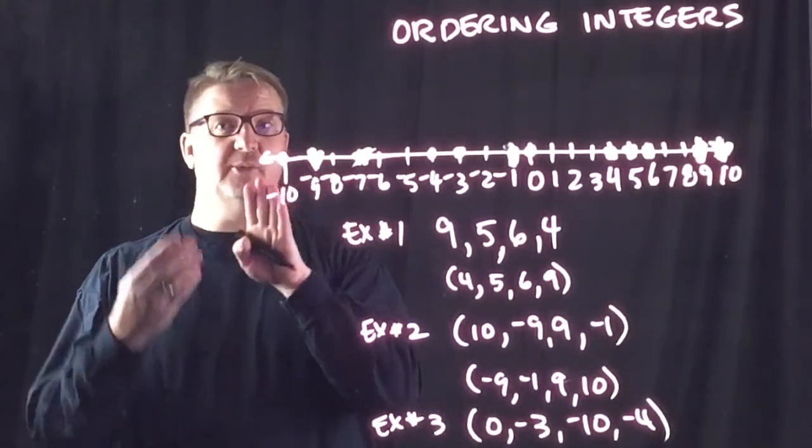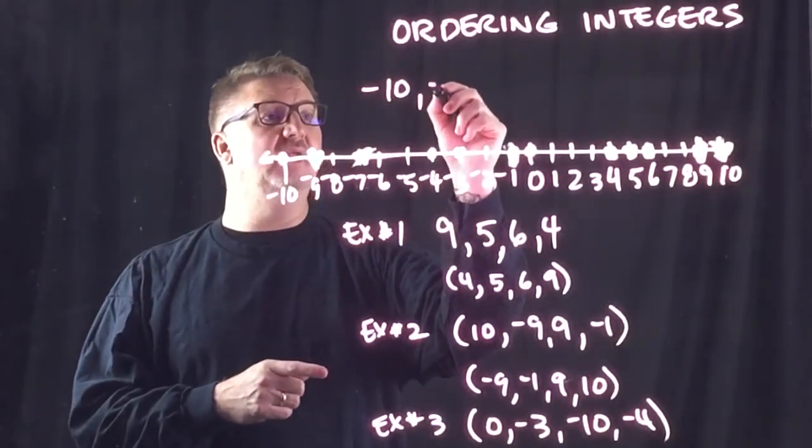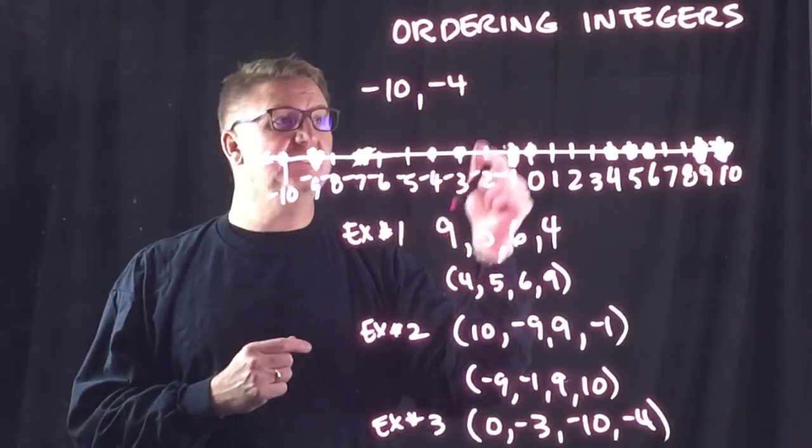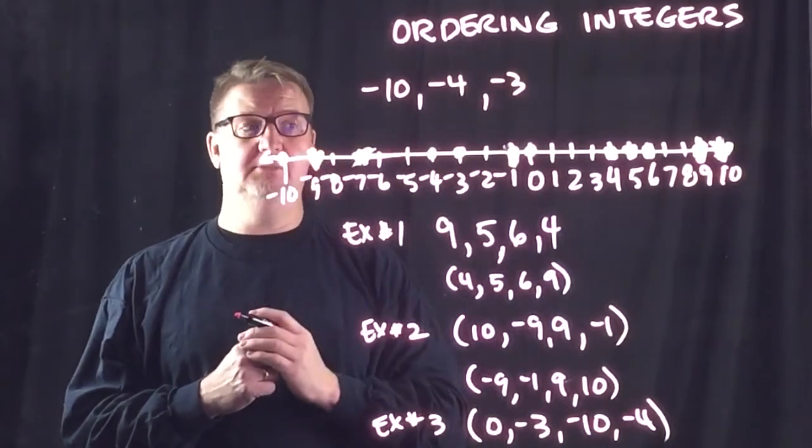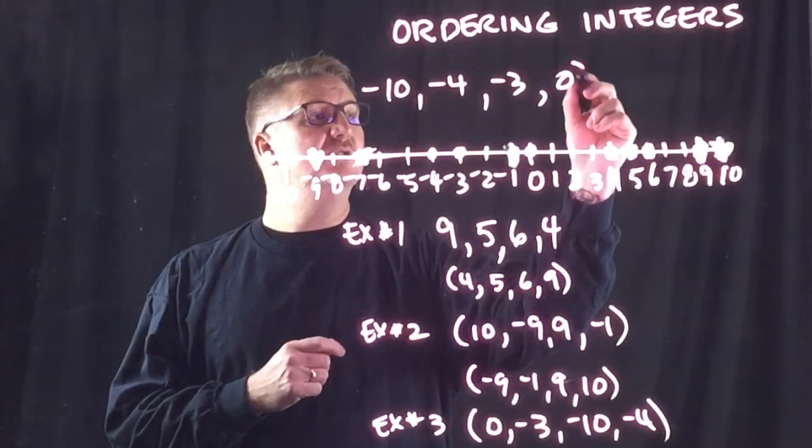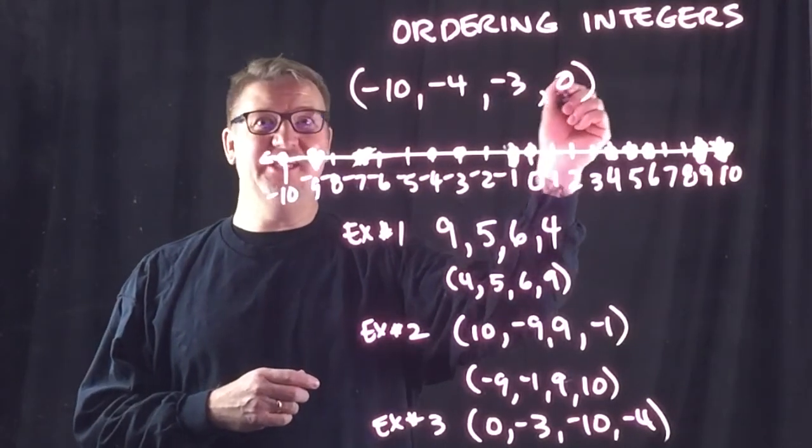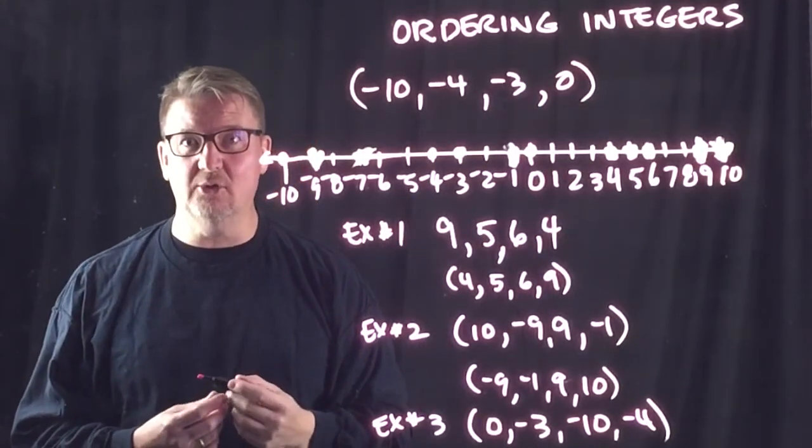So, my first number going left to right, negative 10. My next number, negative 4. My next number, negative 3. My next number is 0. So, this is going from least to greatest. So, in this case, 0 is the biggest number in that group.